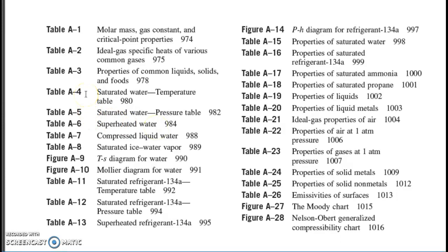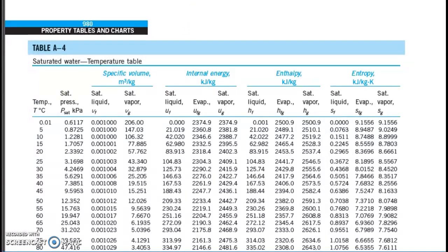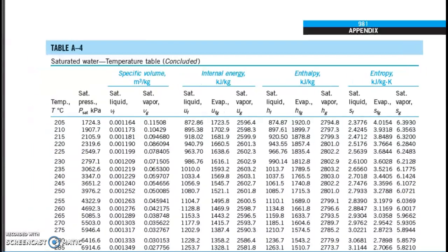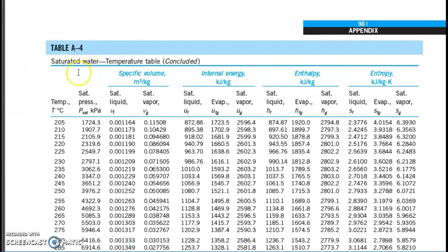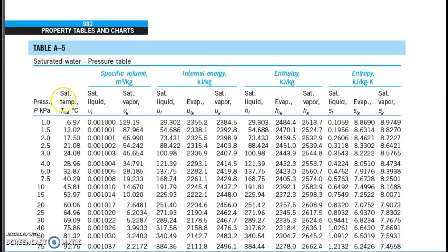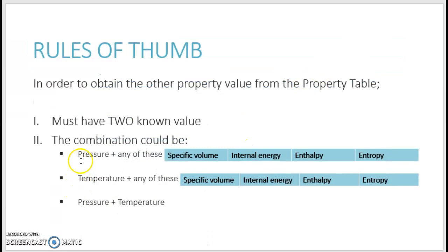Let's have a look at table E4. You can see the difference: the first column in table E5 is pressure, whereas for table E4, the first column is temperature. When you have a combination of pressure and any of these extensive properties, you will be able to complete all the unknown values. So a combination of pressure and any of these — you will read from table A5.